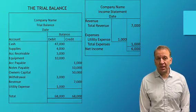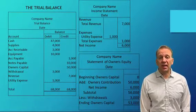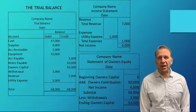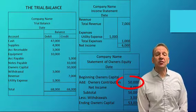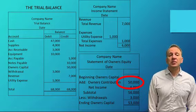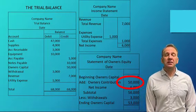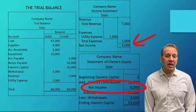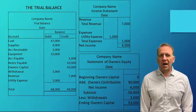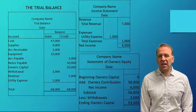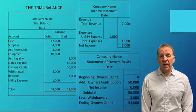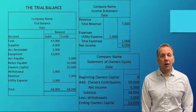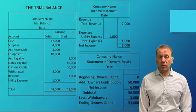Here is the statement of owner's equity. It starts with the beginning capital balance, which is zero because this was a brand new company in our example. And then the owner contributed $50,000 during this year. The net income gets added to the owner's capital because the net income belongs to the owner. This is a sole proprietorship. Later in the video, we'll go through these closing entries and I'll point out the journal entries — the closing entries for the sole proprietorship — and I'll also mention what they would be if this were a corporation.